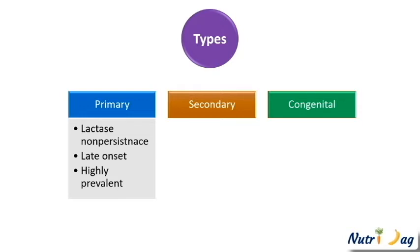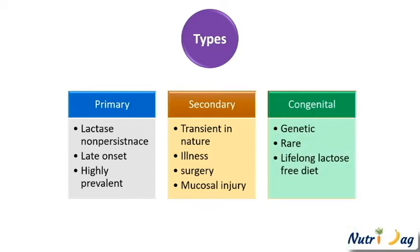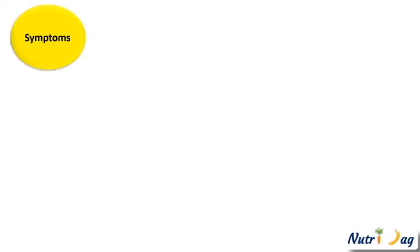Secondary lactose intolerance occurs when the small intestine decreases lactase production after illness, injury, or surgery involving the small intestine. Congenital lactose intolerance, also called developmental lactose intolerance, is genetic — babies are born with it due to a complete absence of lactase activity. This disorder is passed from generation to generation, and these individuals must follow a lactose-free diet lifelong.